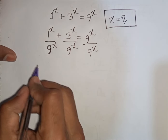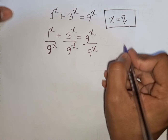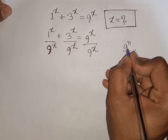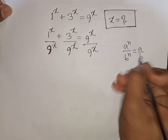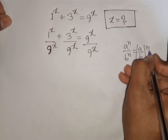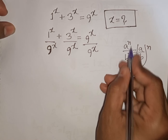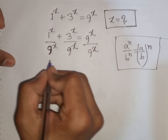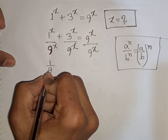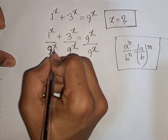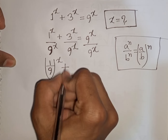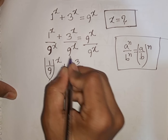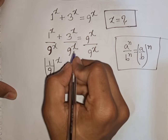Since the exponent x is the same but the bases differ, we apply the exponential rule: a^n · b^n = (a/b)^n. Using this, 1^x / 9^x = (1/9)^x and 3^x / 9^x = (3/9)^x.